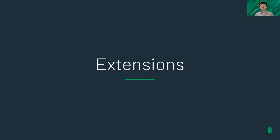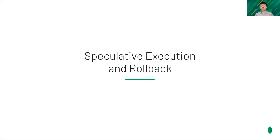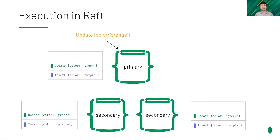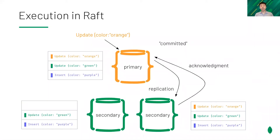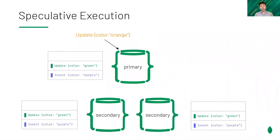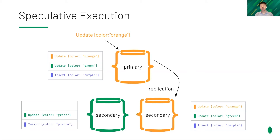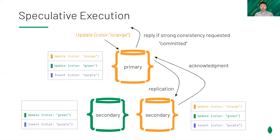On top of the basic pull-based consensus protocol, we extended the design to introduce some key features. MongoDB supports reads and writes with weaker consistency; speculative execution enabled this feature. In Raft, only when the write becomes committed can the update be applied and returned to the client. MongoDB, on the other hand, applies the operation to the database when it is appended to the op-log. This permits acknowledging writes with weaker consistency levels and reading the latest data before it is committed. Secondaries also apply speculatively. After the write becomes committed, it acknowledges the clients if strong consistency is requested.